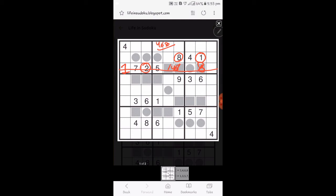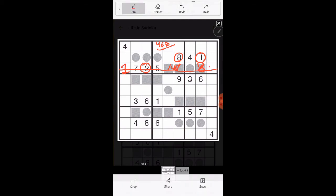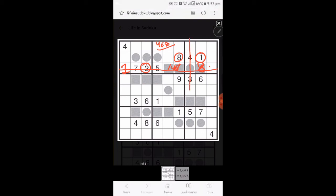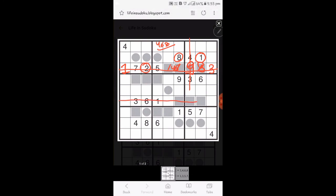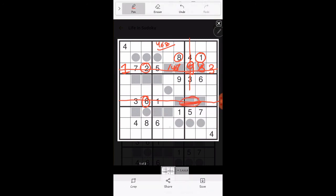Remaining numbers are 3 and 9 in this row. Since 3 is here, 3 cannot go in this cell, so 3 should go here and 9 should go here. Similarly, let's see the sixth row. Since 6 is already present, 2, 4, and 8 should go in these 3 cells.